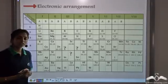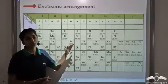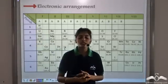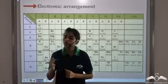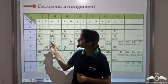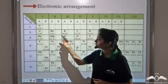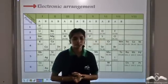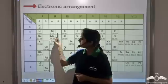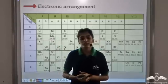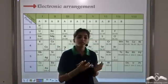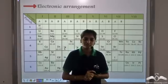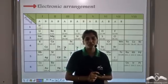Another problem with this table was that it says nothing about the electronic arrangement of the elements. Electronic configuration is a very important property for the classification of elements. Since Mendeleev classified elements on the basis of atomic masses, it says nothing about the electronic arrangement. Because of these defects, Mendeleev's periodic table had to be discarded, but his efforts and contributions to the classification of elements are greatly appreciated. Hence, he is known as the father of the periodic table.